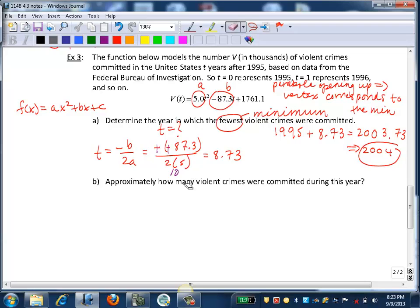Part B. Now they actually want to know the number of violent crimes that were committed that year. So part A wanted the t value. Now we want the V(t) value. So we want the number of violent crimes in the year 2004. So we now want to find V(8.73).